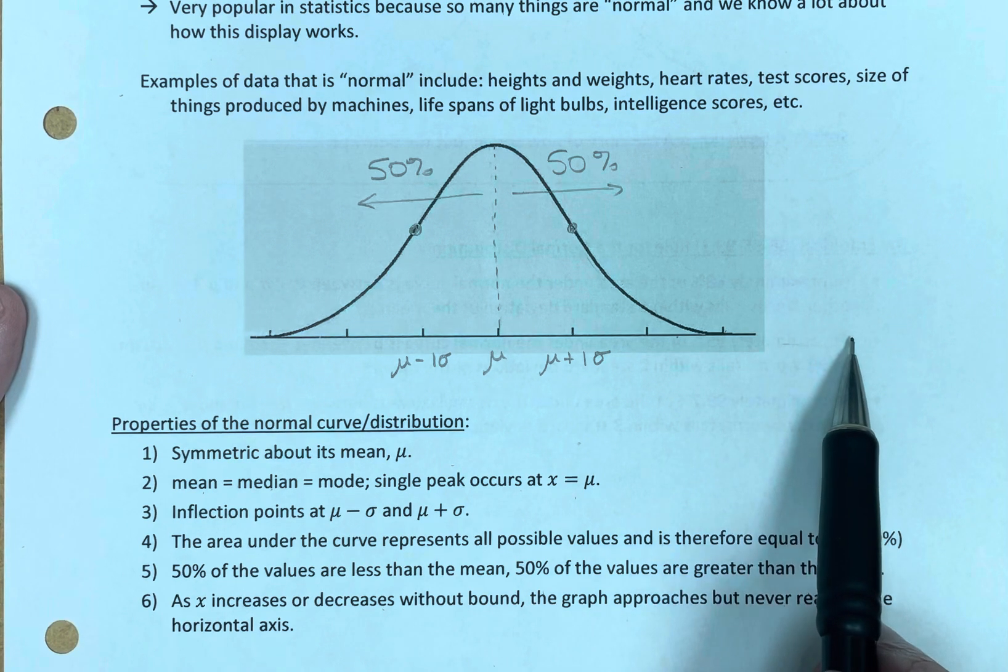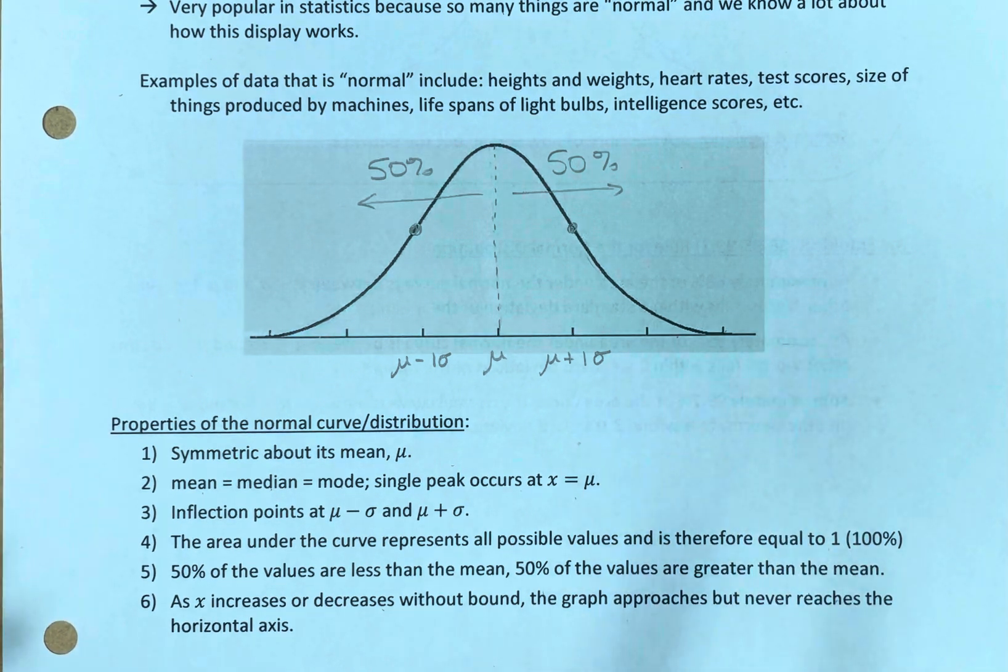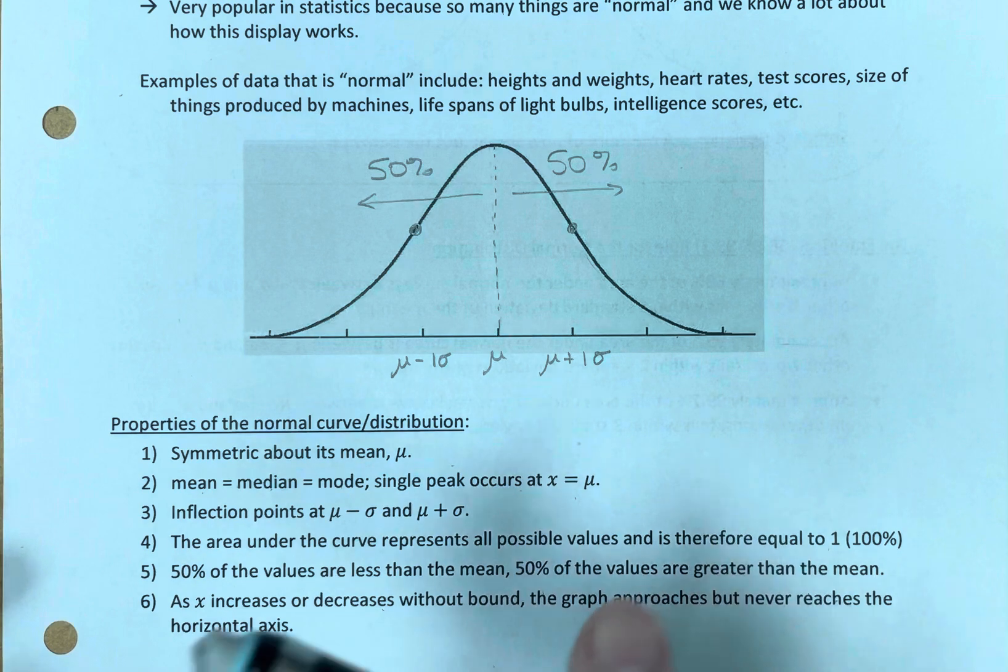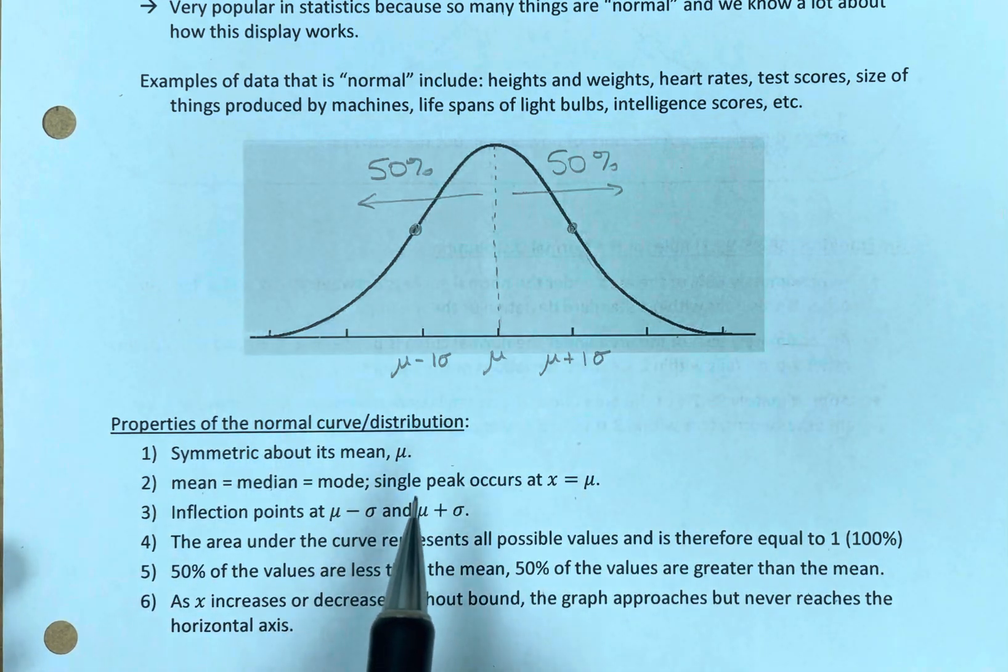And the distance between this horizontal line and the graph shrinks, shrinks, shrinks. But there's always just the tiniest bit of space there. So, that's how this works.